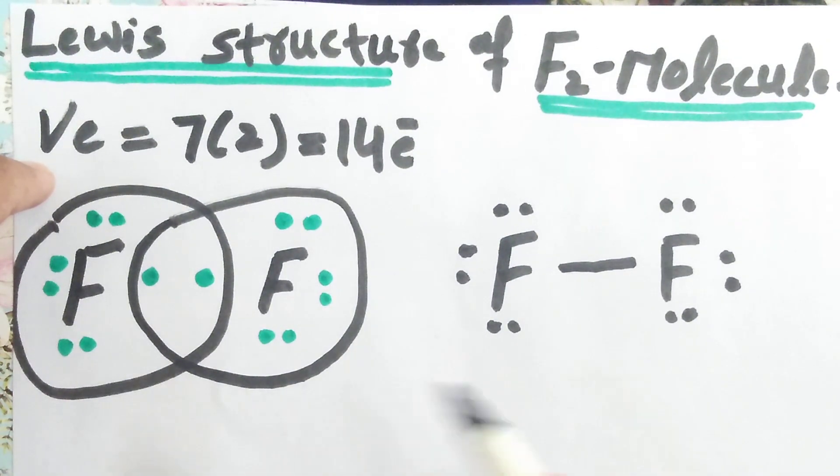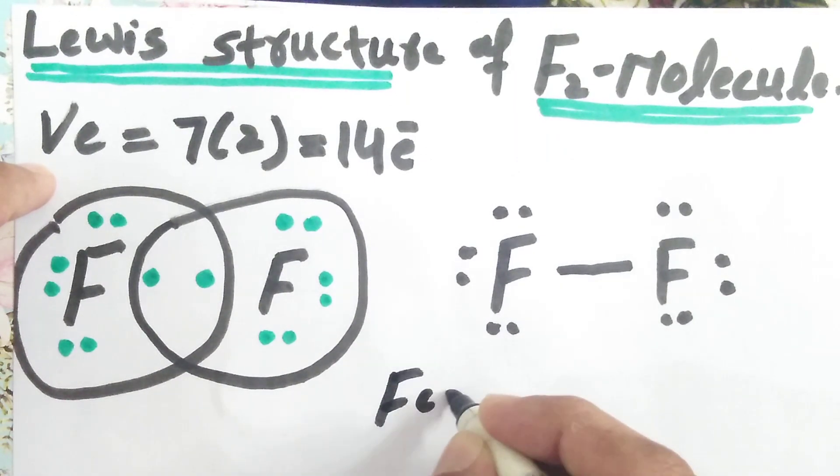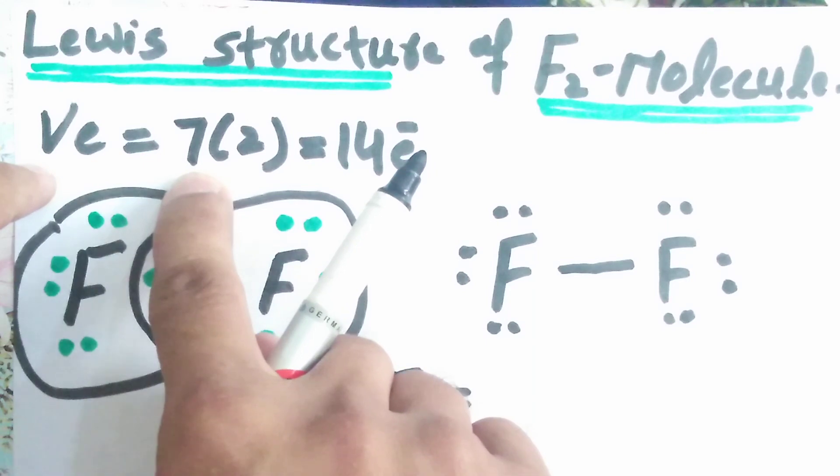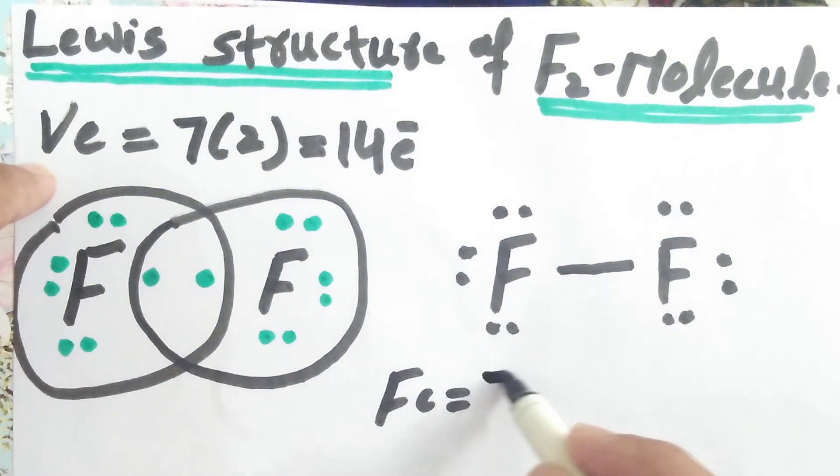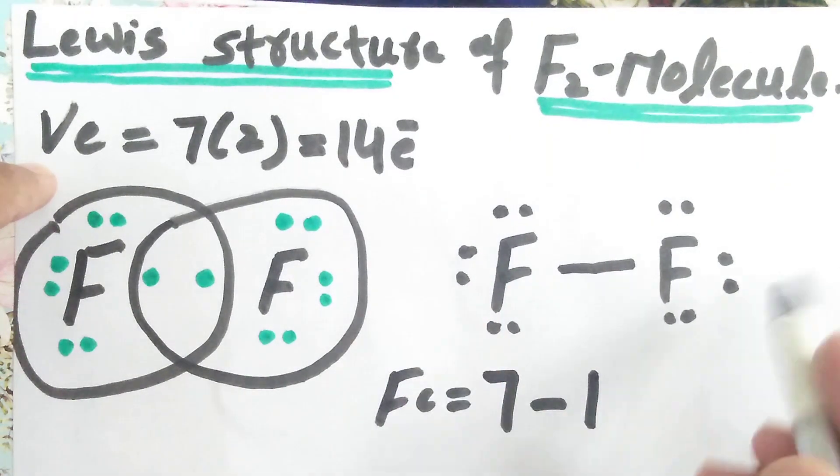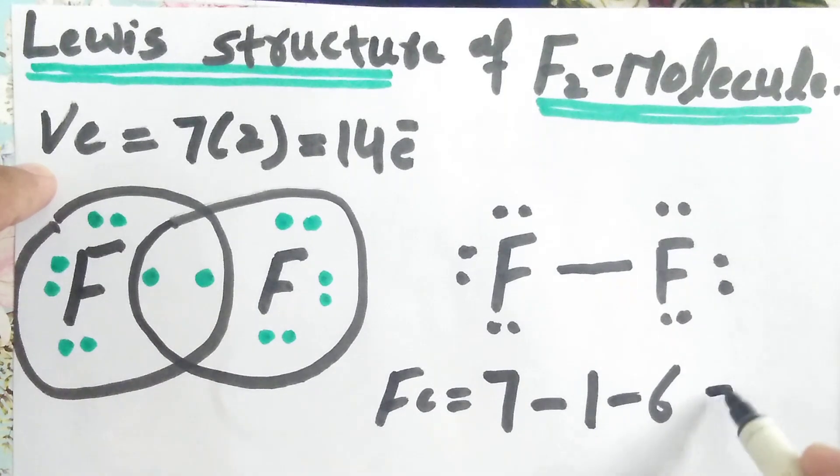To calculate the formal charge on fluorine atom, the formal charge formula is: number of valence electrons, we know that is 7, minus bonds which is 1, minus dots these are 6. So formal charge is equal to 0.